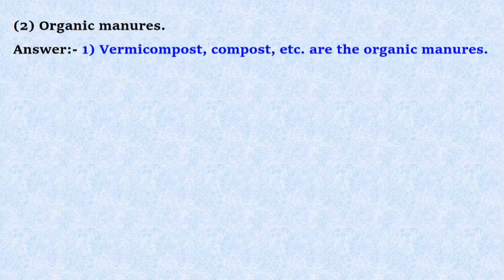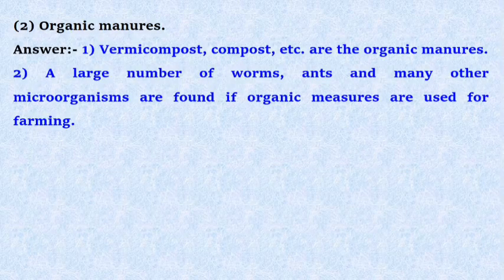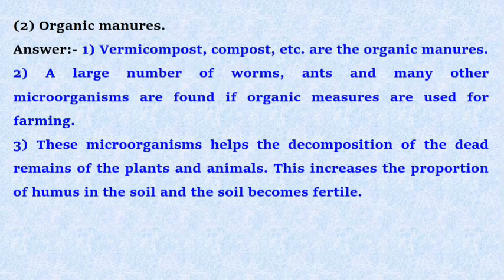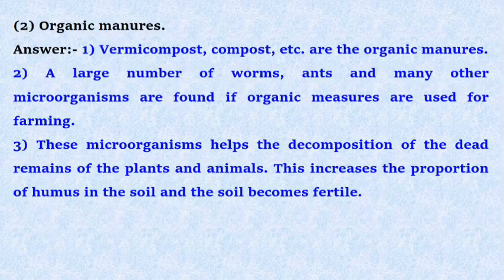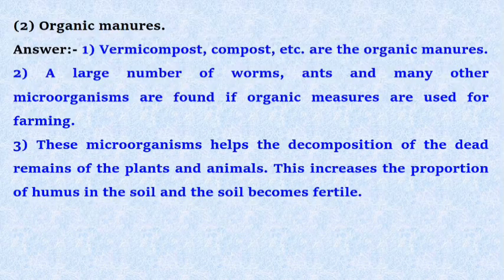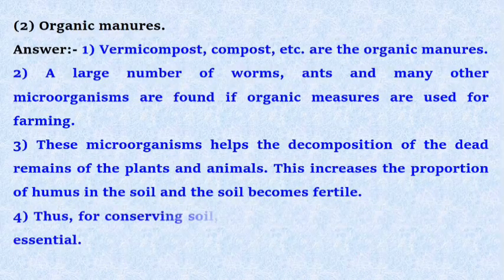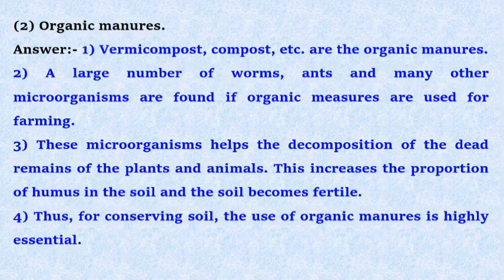Second topic: Organic manures. Answer: Vermicompost, compost, etc. are organic manures. A large number of worms, ants, and many other microorganisms are found if organic manures are used for farming. These microorganisms help the decomposition of the dead remains of plants and animals. This increases the proportion of humus in the soil and the soil becomes fertile. Thus, for conserving soil, the use of organic manures is highly essential.